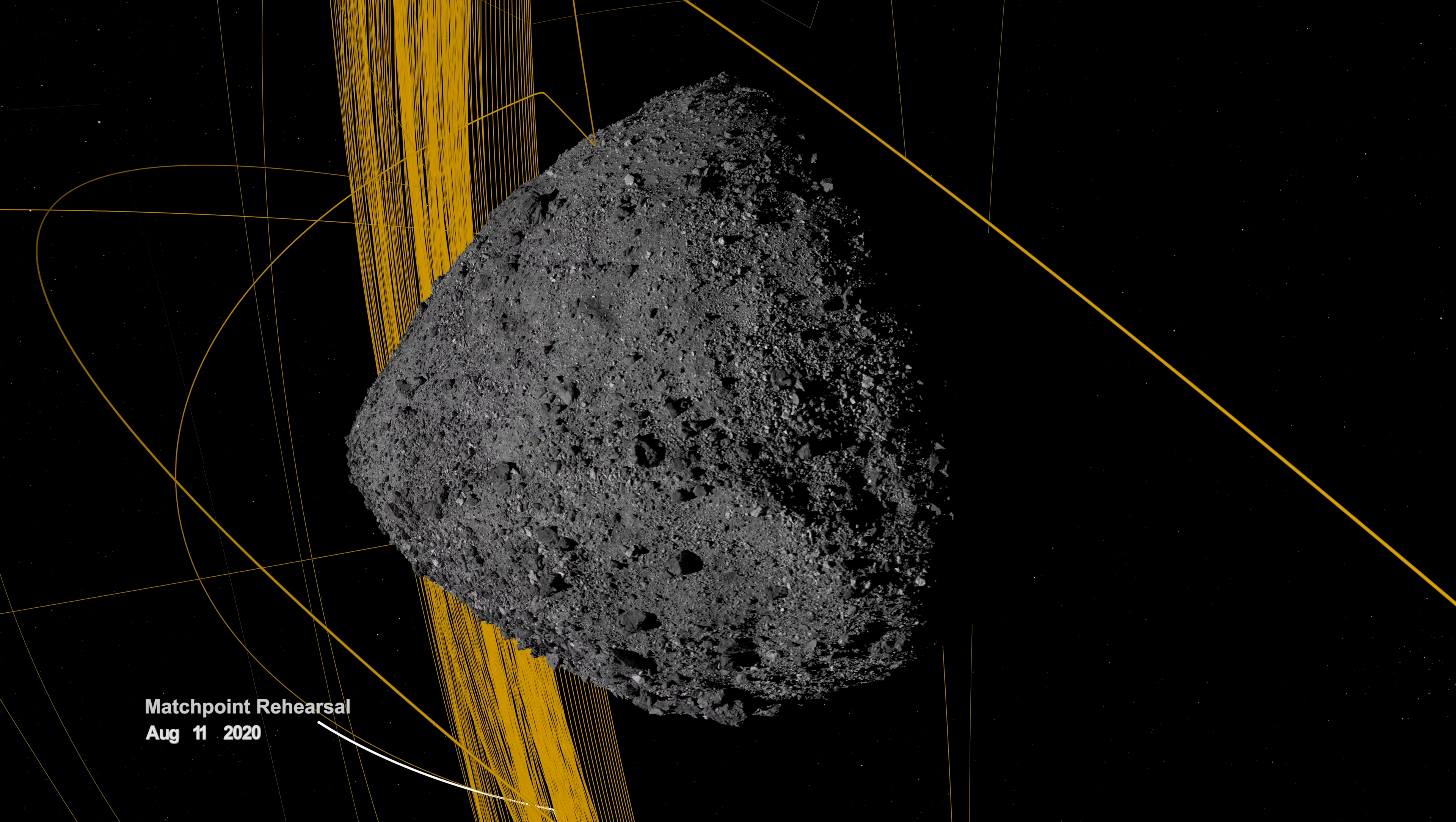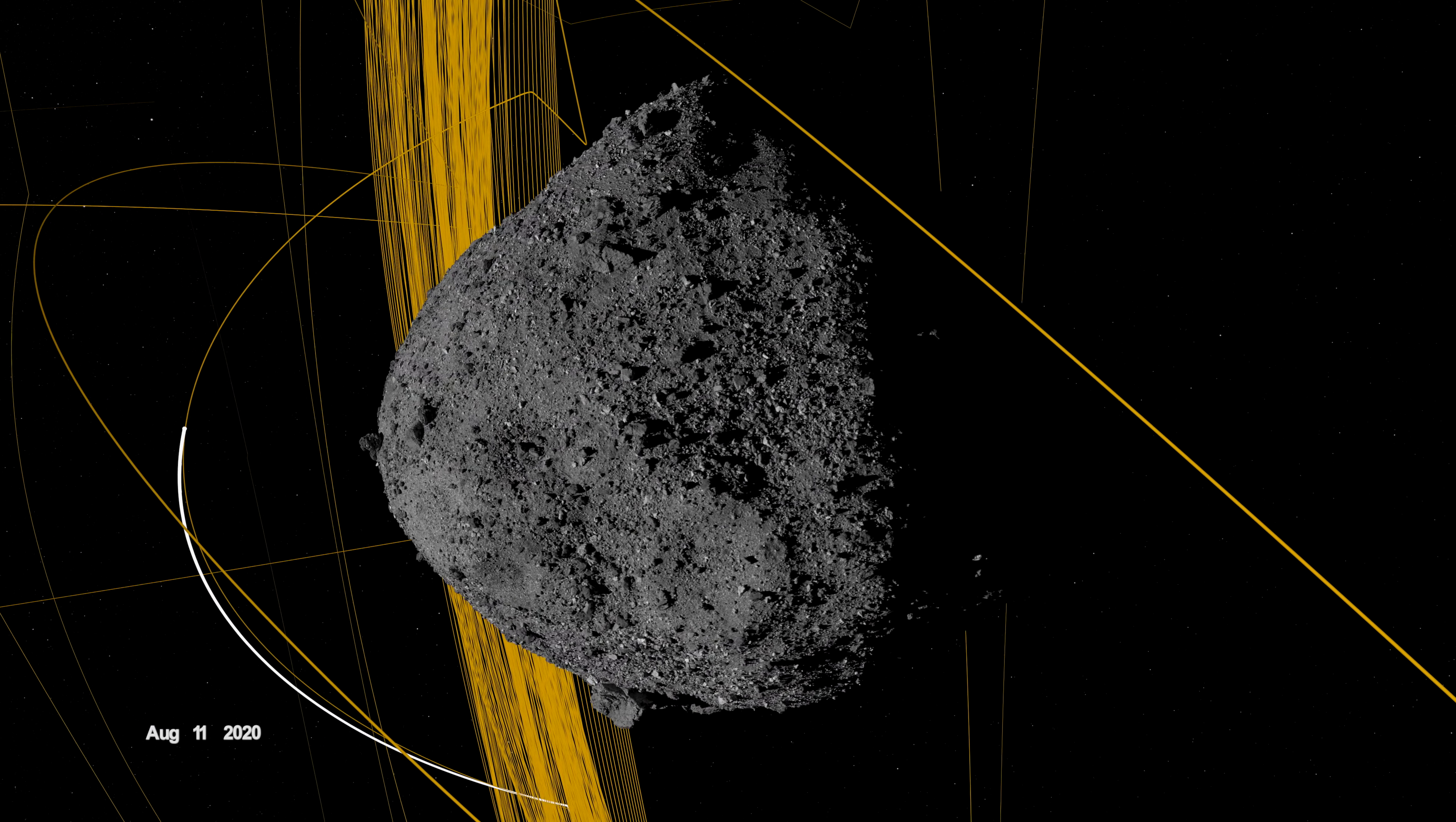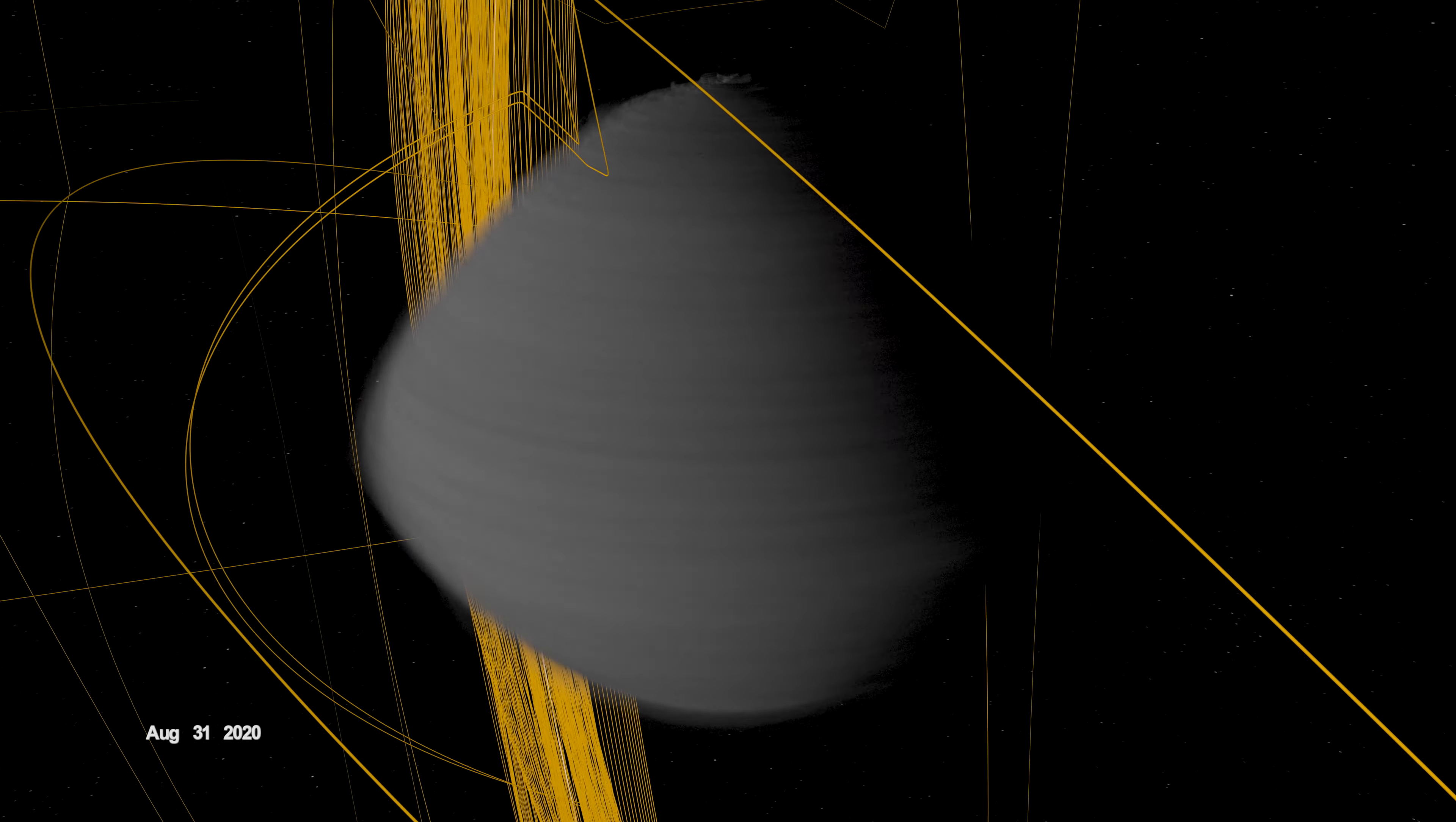On August 11th, OSIRIS-REx departed its home orbit and made a four-hour traverse to Bennu's northern hemisphere, retracing its earlier path. After performing the checkpoint engine burn to begin its descent, it made a second engine burn called matchpoint to match Bennu's rotation before backing away at an altitude of approximately 40 meters.